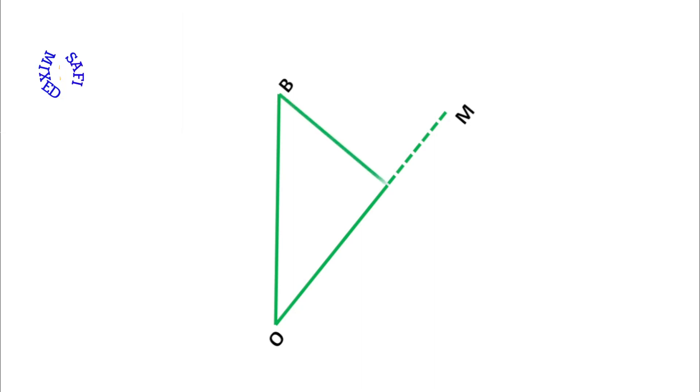If I drop a perpendicular from point B on line OM and represent the point with A, then the angle at vertex A is 90 degrees. Since there is a 90 degree angle in this triangle, therefore triangle AOB is called a right angle triangle.